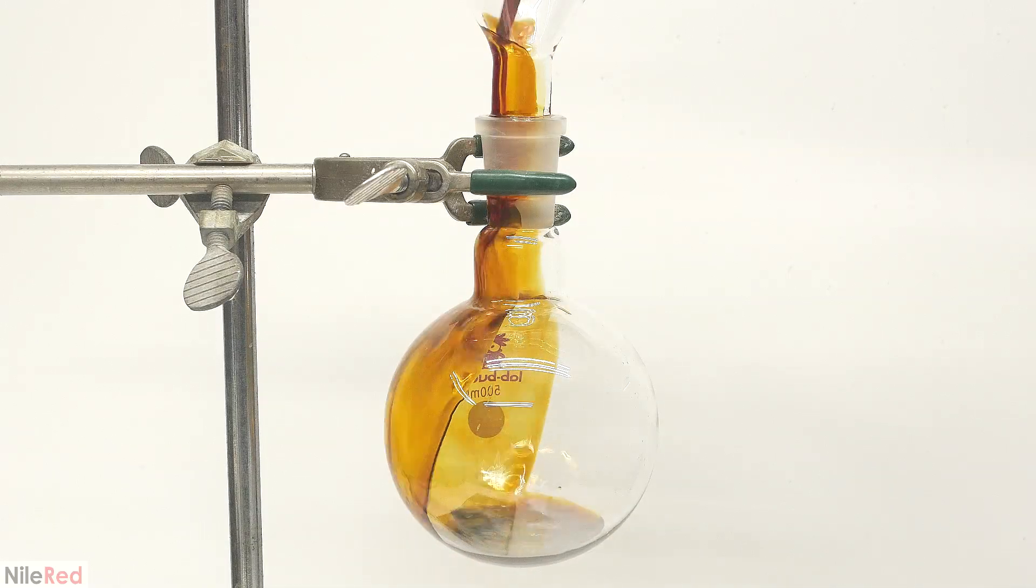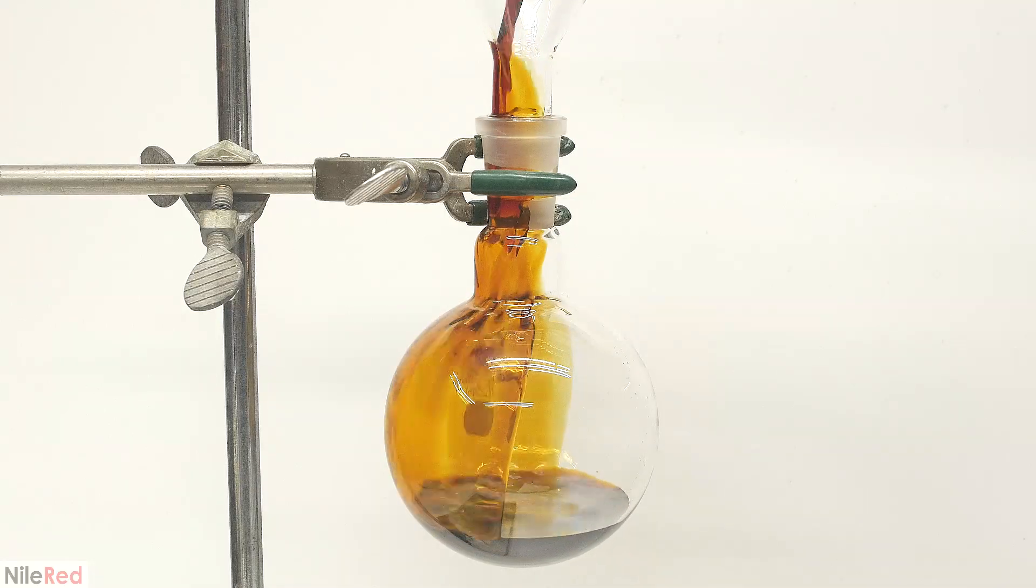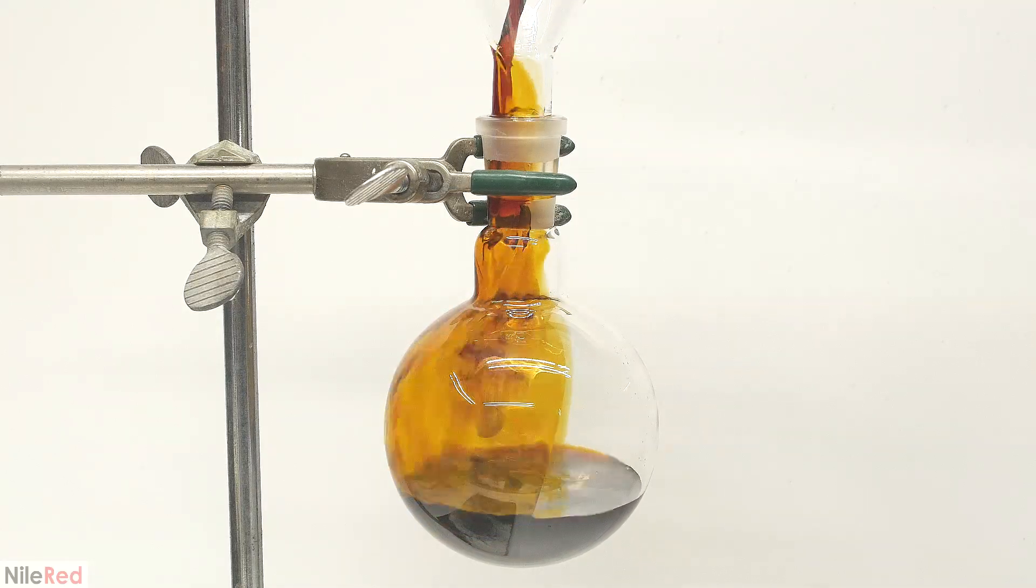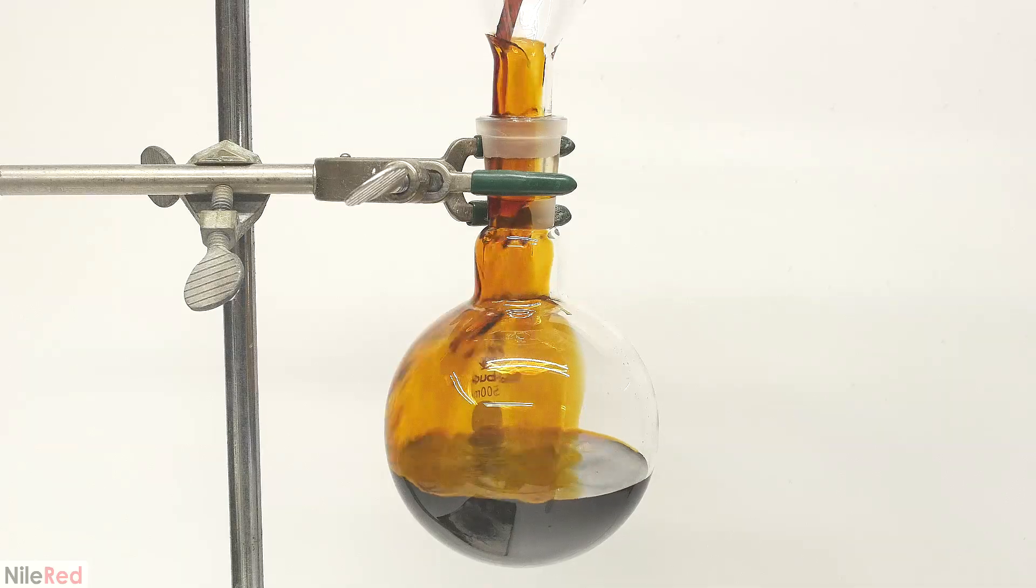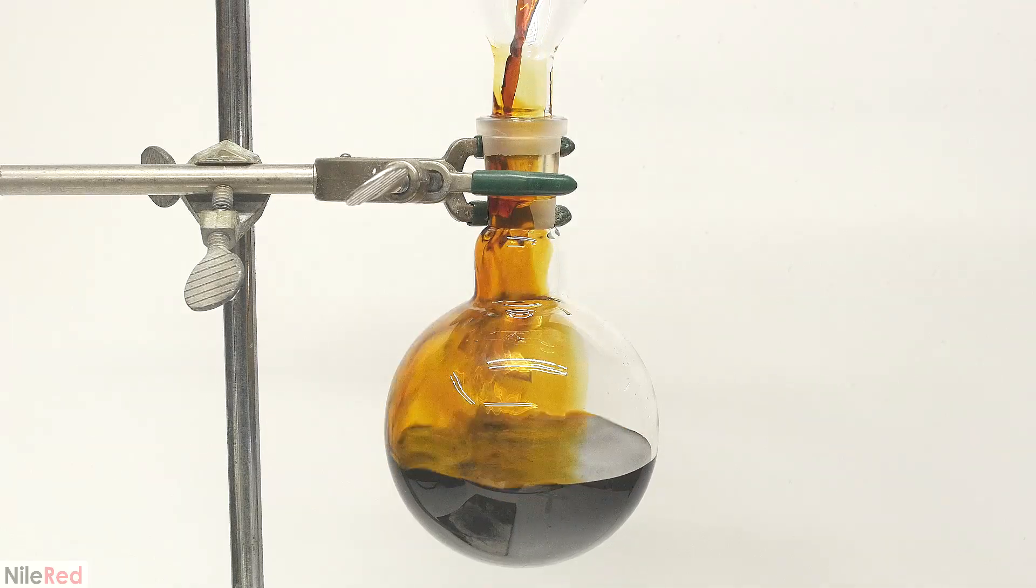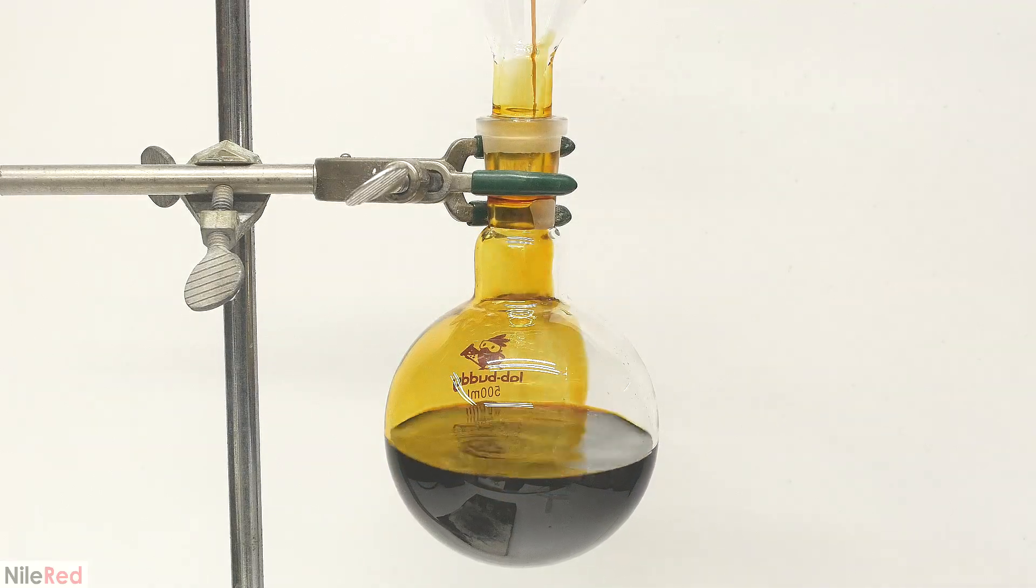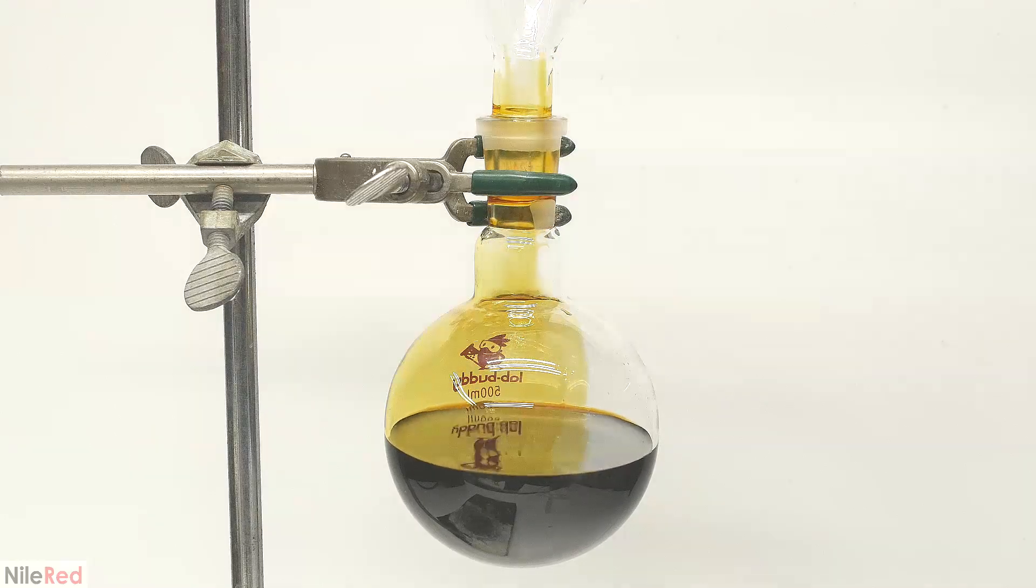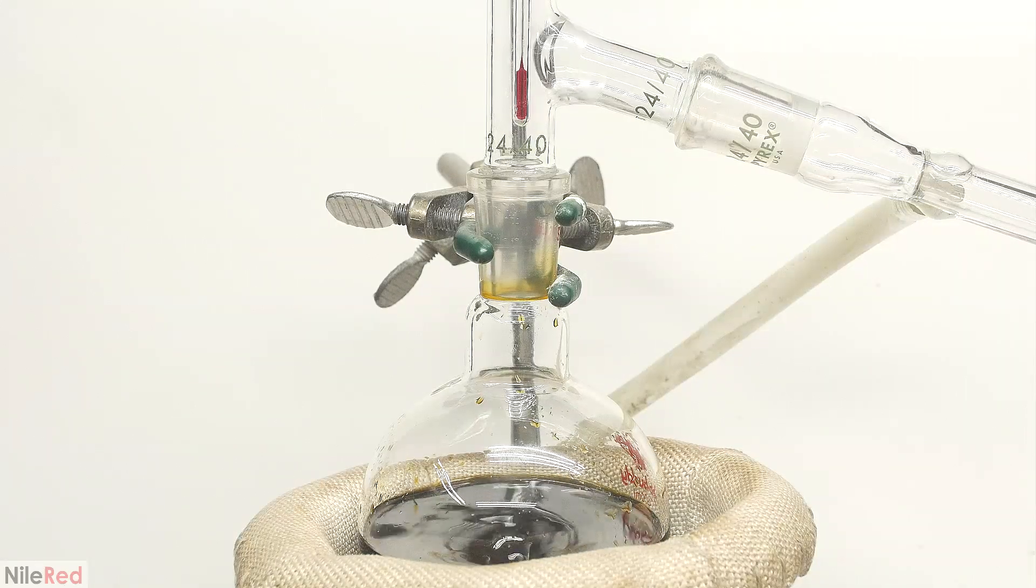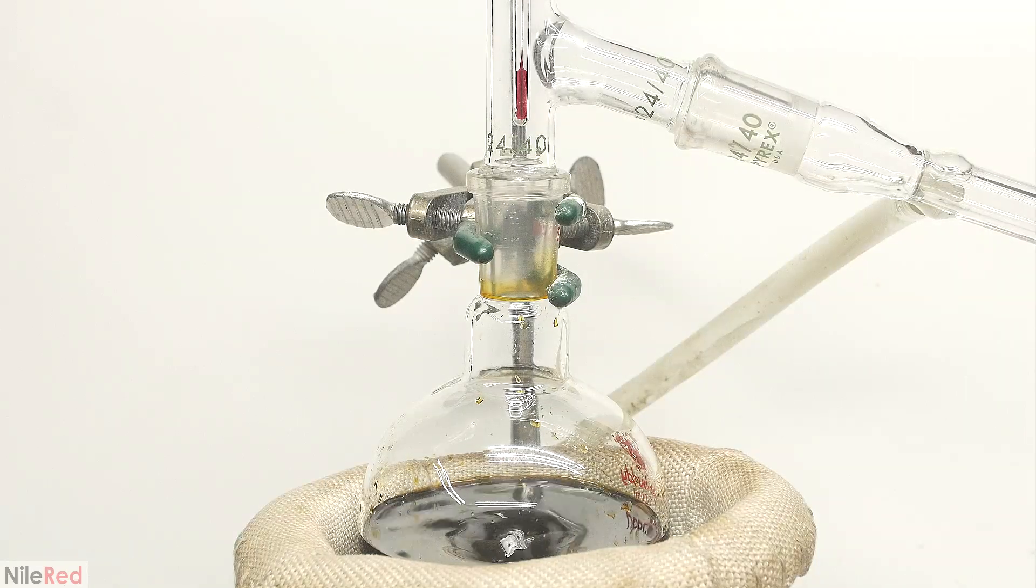To do this, it's pretty simple. I just pour everything into a large round bottom flask, and then I carry out a vacuum distillation. It's not absolutely necessary to do it under vacuum, but because aniline degrades in the presence of oxygen, it just makes things a little bit cleaner.